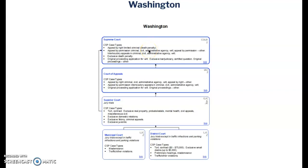Many states that have the death penalty are similar — California, for example, is very similar. So anytime a death penalty case is heard in superior court, it is automatically appealed to the state supreme court. If you were to ask me how many levels of appeal there are in the state of Washington, I would say there are three levels of appeals.